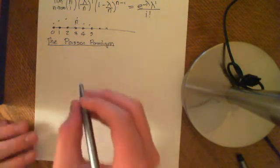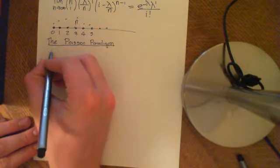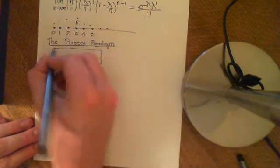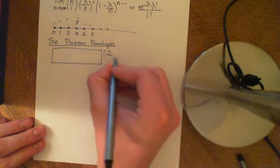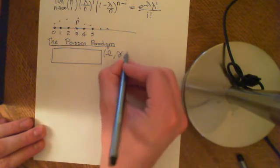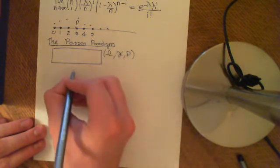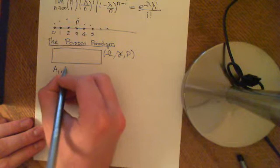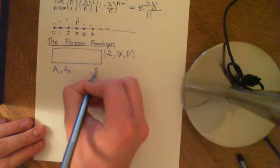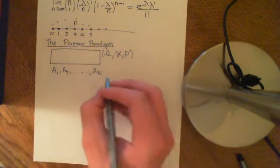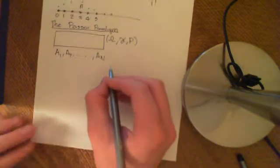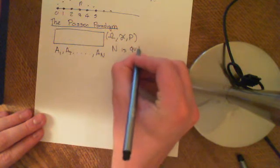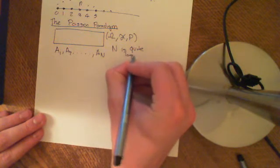So the Poisson paradigm is this. Let's have a probability space — some abstract probability space: Omega, curly F (the set of events), and a probability measure. And let's have a set of events: A1, A2, all the way up to A_N. This is a set of events, and we're going to say that the number of these events N is quite large.